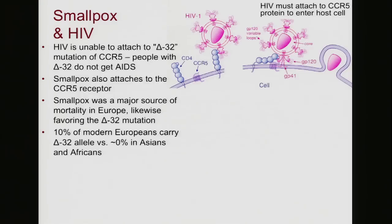In modern Europeans, 10 percent carry the Delta 32 allele. Because of that long history of coevolution with smallpox, Europeans have a much higher gene frequency of the Delta 32 allele than do Asians or Africans.